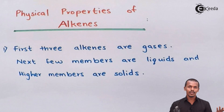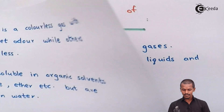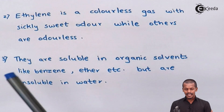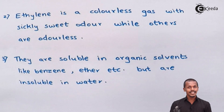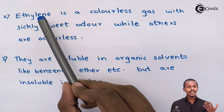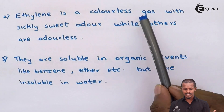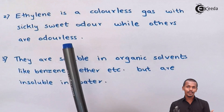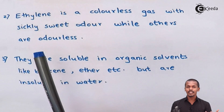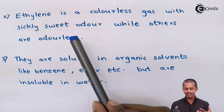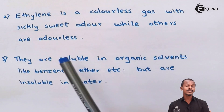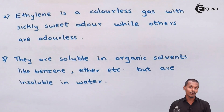This is similar to what we studied about alkanes, where lower members are in gaseous form and higher members are in solid form. Ethene, or ethylene by its common name, is a colorless gas with a sickly sweet odor, while the other alkenes are colorless and odorless.